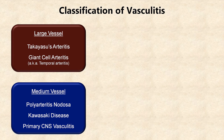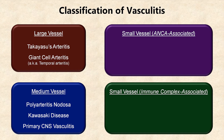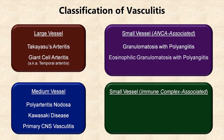Small vessel vasculitis is further subdivided into that which is associated with an autoantibody called anti-neutrophil cytoplasmic antibody and that which is associated with immune complexes. ANCA-associated vasculitis includes three diseases: Granulomatosis with polyangiitis, a particularly dangerous vasculitis primarily affecting the kidneys, lungs, upper airway, nose, and eyes. Eosinophilic granulomatosis with polyangiitis, characterized by the combination of asthma, sinus problems, neuropathy, and peripheral eosinophilia. And microscopic polyangiitis, which is clinically very similar to granulomatosis with polyangiitis, with the exception of a lack of upper airway involvement and a lack of granulomas on biopsy.